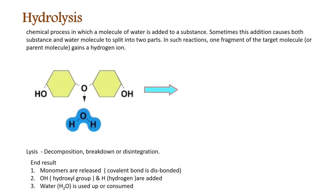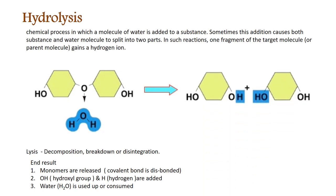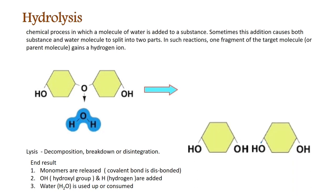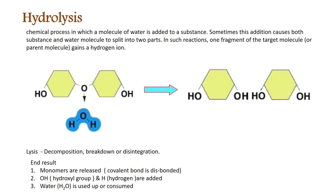Once the two monomers have been added with water, a resulting product appears on the right side of the equation. The HOH or water on the left side is transformed so that hydrogen goes to the left monomer and hydroxyl to the right monomer — meaning the water from the left equation is used up on the right side. This results in normal monomers being released: the two combined monomers from the beginning are now separated and disintegrated.